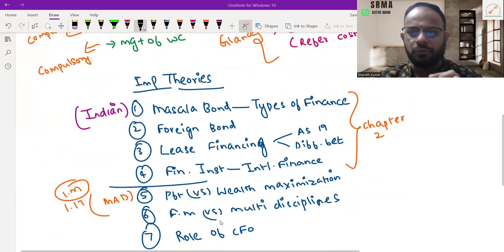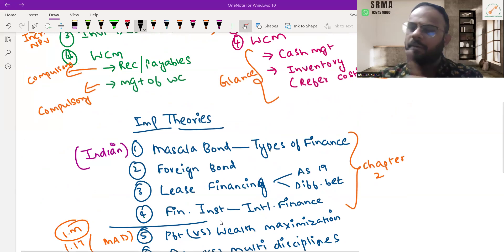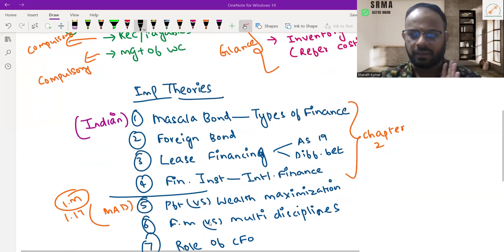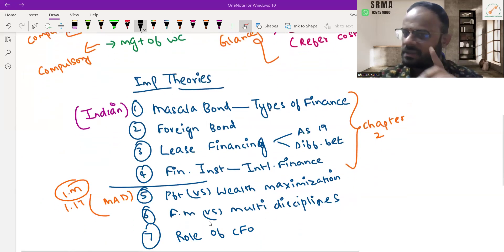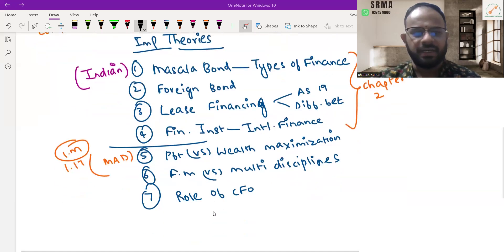Glance at important theories: Chapter 1 and Chapter 2. In Chapter 2, the masala bond, Indian masala bond—that is types of finance, foreign bond, comparison, lease financing, AS19, and the connection. Differentiate between operating lease and financial lease. Financial instruments are again important in international finance.